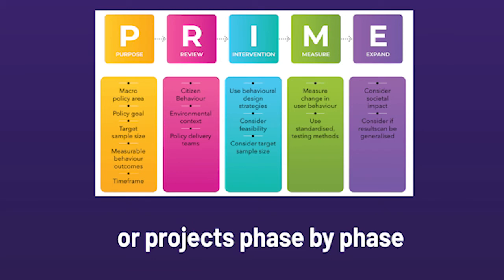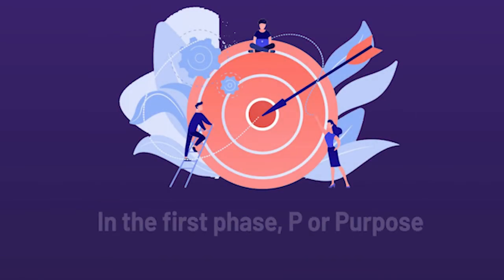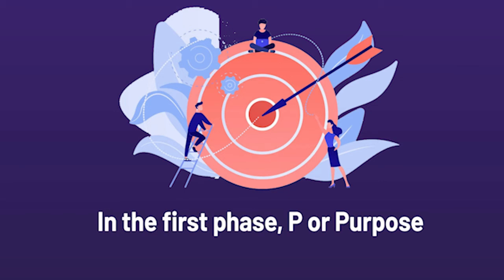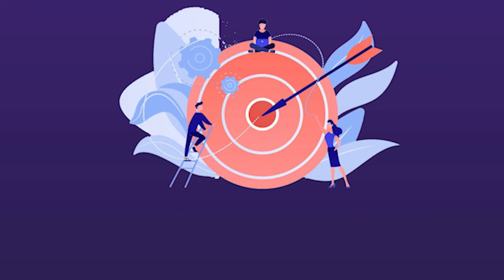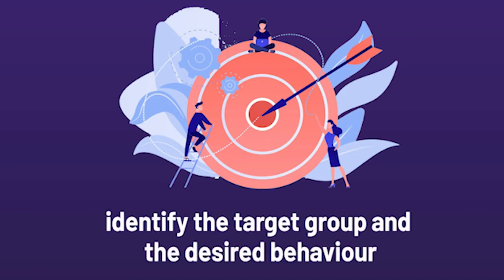I will provide you with an overview of the PRIME implementation framework in this lesson. In the first phase, P, or Purpose, you need to set the purpose of your policy or initiative. You also need to identify the target group and the desired behaviour — that is, the behaviour that you want the target group to practice.